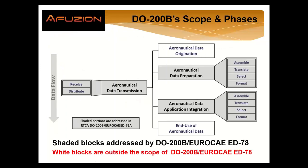DO200 scope and focus is about originating the data and assuring that the source is valid — but that's not DO200. Aeronautical data origination is outside the scope of DO200. DO200 is about the data flow after the originator: how we receive and distribute data. That's the transmission.